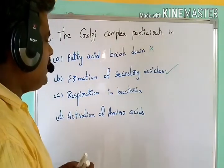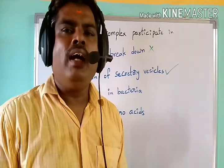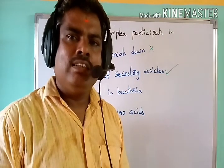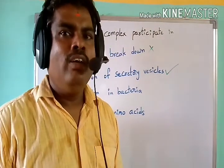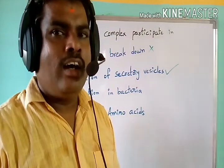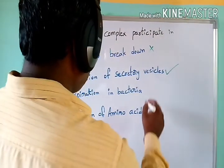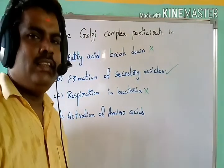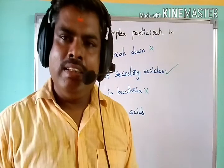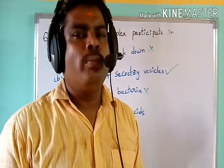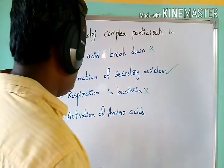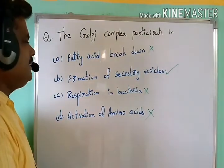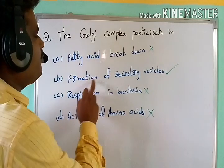Option C: respiration in bacteria. Bacteria is a prokaryotic organism, and the Golgi complex is not present in bacteria, so it is not involved in bacterial respiration. This is not a correct statement. Option D: activation of amino acids. Activation of amino acids takes place in the cytoplasm, so this is also not correct. Therefore, the Golgi complex is involved in the formation of secretory vesicles.